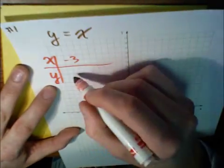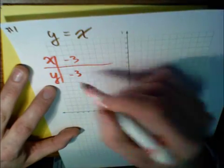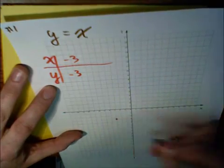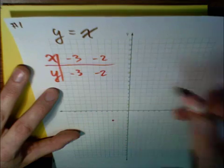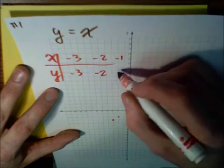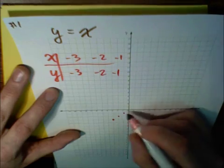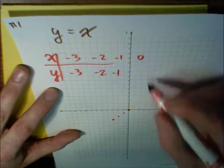If I put in negative 3, y will be negative 3. So then I'll graph the point negative 3, negative 3. If I put in negative 2, y will be negative 2. If I put in negative 1, y will be negative 1. If I put in 0, y will be 0.